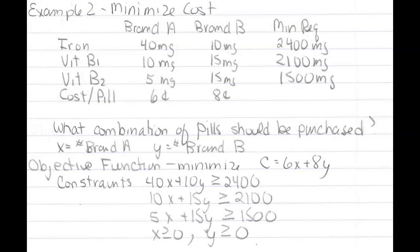to take at least 2,400 milligrams of iron, 2,100 milligrams of vitamin B1, and 1,500 milligrams of B2 over a period of time. Two vitamin pills are suitable. Brand A costs 6 cents a piece, and brand B costs 8 cents a piece.